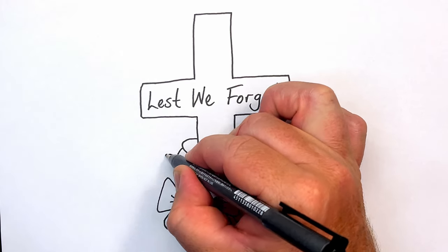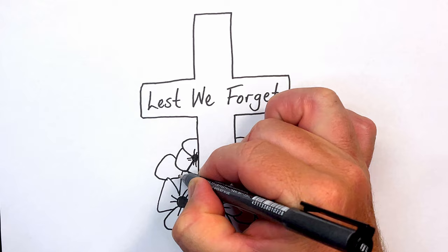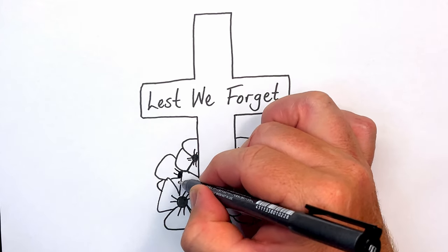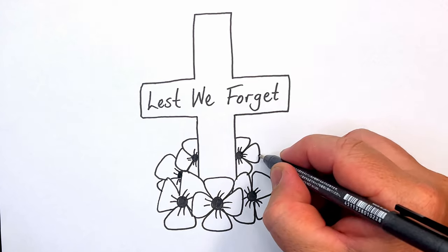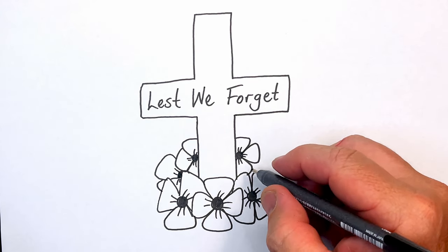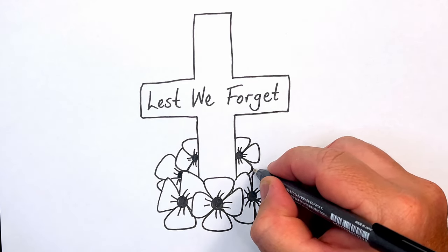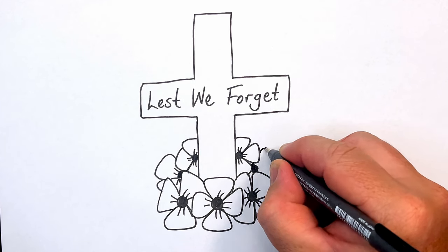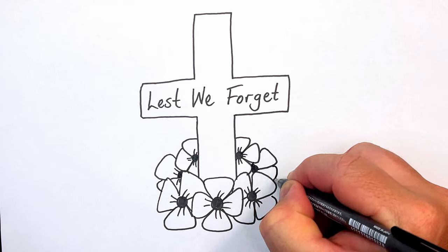To make this look like it's a wreath of poppies going around the cross, we're going to put another poppy just tucked in behind there, one on each side. Start with the little black part in the middle, and then you can bring your poppy petals out from that.